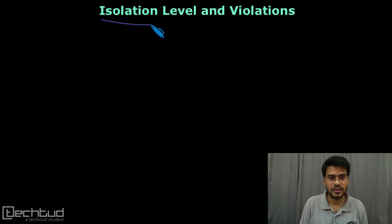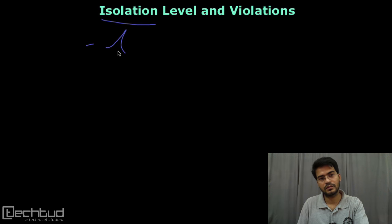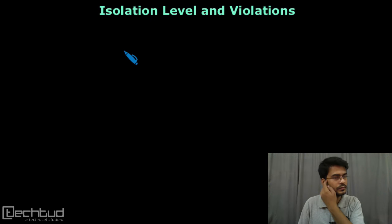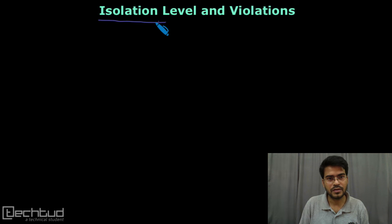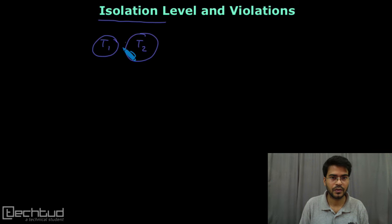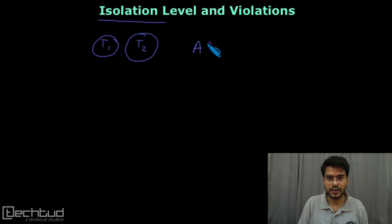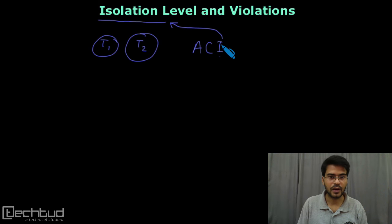As the name suggests, isolation is the isolation of two transactions. Let's say we have two transactions T1 and T2. Isolation means how these two transactions are isolated from each other. When we studied the ACID property, the 'I' stands for isolation and it means how two transactions are isolated from each other.